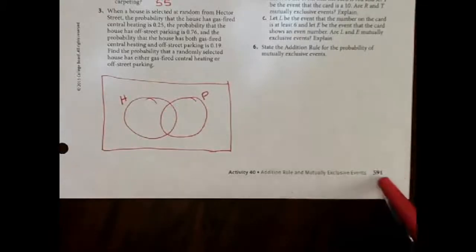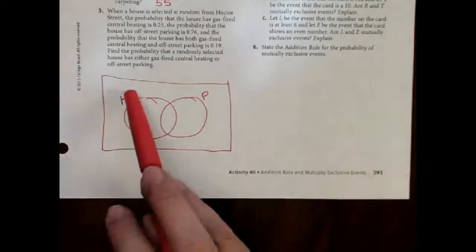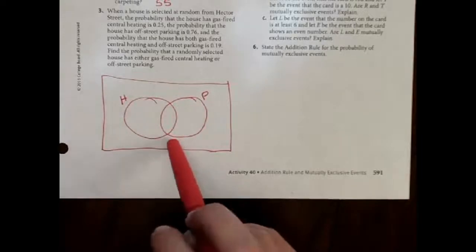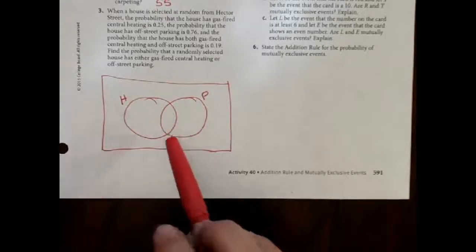Okay, this is page 591, number 3. It doesn't say you have to make a Venn diagram, but I think it's easiest to understand if we do make one.